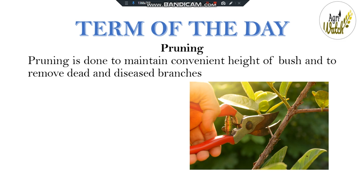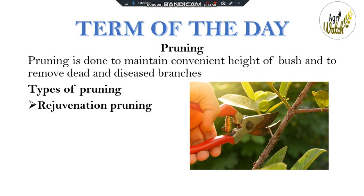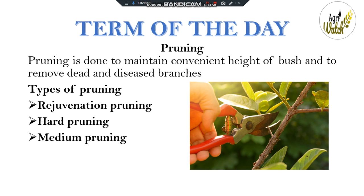Today I will be discussing about the term of the day: pruning. Pruning is done to maintain convenient height of bush and to remove dead and diseased branches. The types of pruning are: rejuvenation pruning, where the whole bush is cut near the ground level, less than 30 cm, to rejuvenate the bush; hard pruning, where formation pruning of young tea is done at 30 to 45 cm for proper spread of the bushes; and medium pruning, to check the bush growing to an inconvenient height, stimulating new wood and maintaining foliage at lower level less than 60 cm.